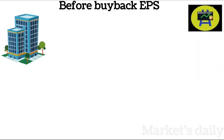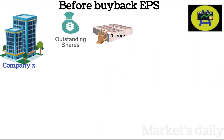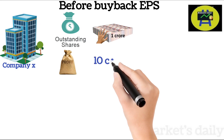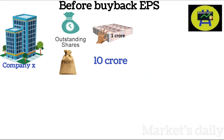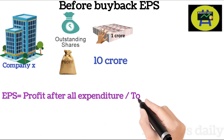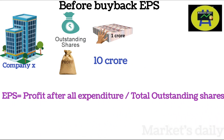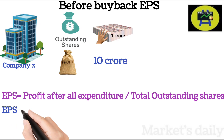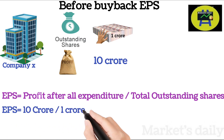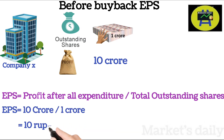Let us assume company X has 1 crore shares and the profit after all expenditures like paying the tax, dividend, etc. is 10 crore rupees. Earnings per share is calculated as profit after all expenditures divided by the total outstanding shares, that is 10 crores divided by 1 crore, which is 10 rupees — that is the EPS in the above case.